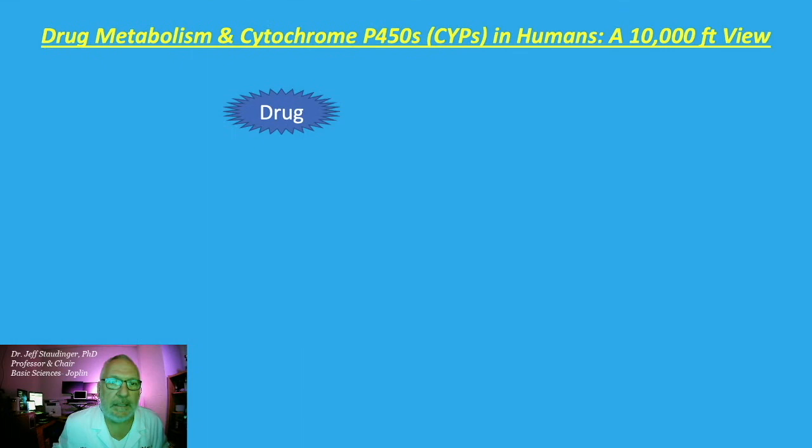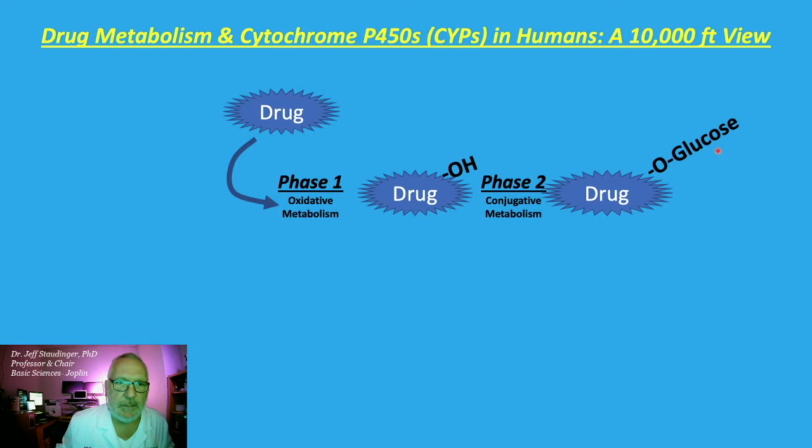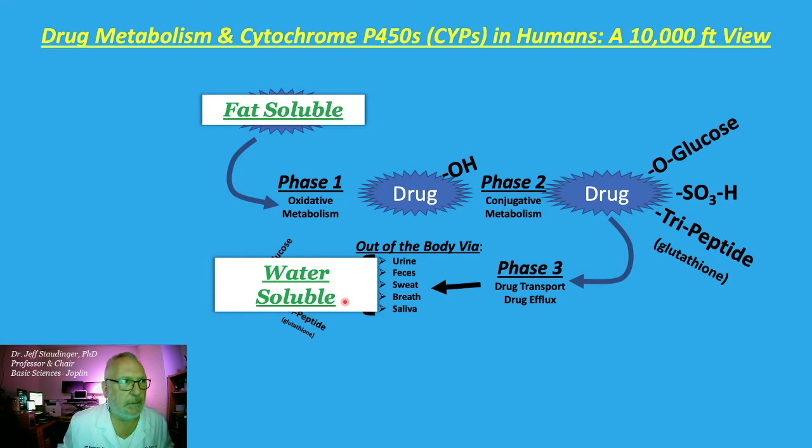At a 10,000-foot view: the drug goes through phase 1 oxidative metabolism to produce the hydroxylated form of the drug. This hydroxylation is oftentimes a reactive site for glucuronidation — glucose gets stuck on the drug — or a sulfonyl group, or a glutathione group, rendering these drugs as substrates for phase 3 drug transporter proteins. That's how drugs get out of the body via urine, feces, sweat, breath, and saliva. This is called biotransformation — it converts a fat-soluble compound into a water-soluble compound.